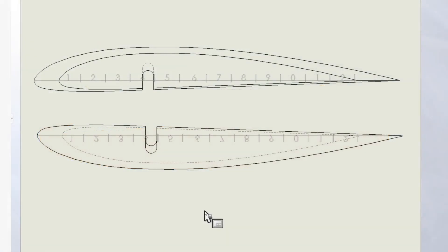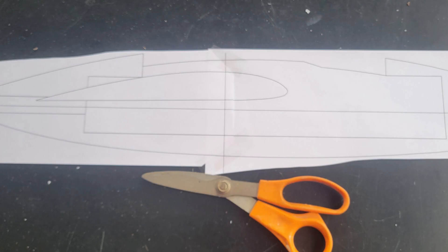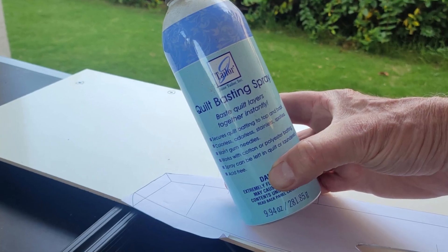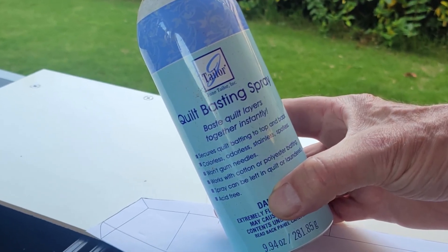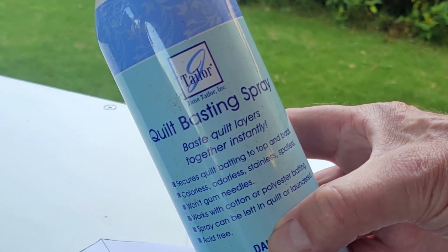For example, here's the print for the template for the wing ribs. There's one inboard rib and one outboard rib, and then there's a set for the left wing and for the right wing. All I have is a little 8.5 by 11 inkjet printer, so I need to put some reference lines and tape smaller pieces together to get the full-size template. I use this quilt basting spray that I got at the fabric store to attach the templates to the foam.